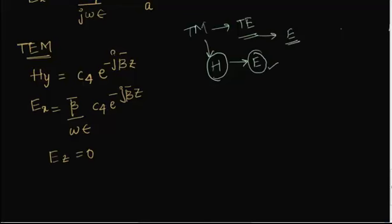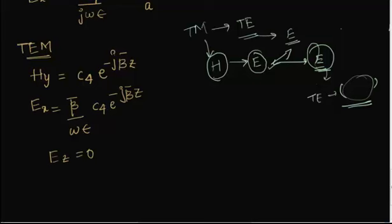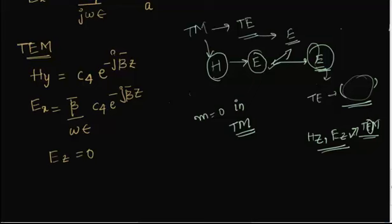Both TE and TM derivations are similar. After obtaining the particular equation in E, we use the relations derived in the previous lecture to obtain all other existing fields. For TEM mode, you can simply put m equal to zero in the TM equations. In TEM there is no transverse electric wave and no transverse magnetic wave; that is E_Z equal to zero and H_Z equal to zero.